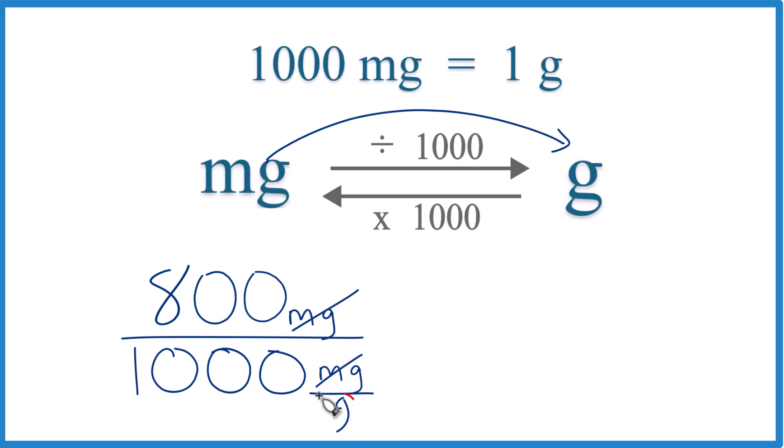Let's just take the decimal point and move it one, two, three places. So now we're dividing by one, and then up here one, two, three. 800 milligrams equals 0.8 grams. We don't need to write these zeros out here. That's it.